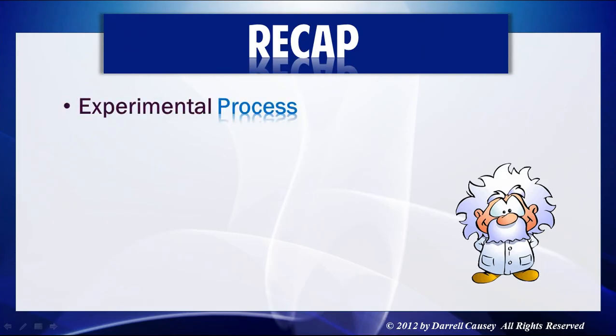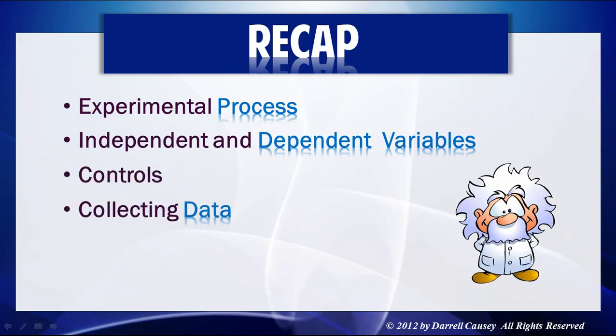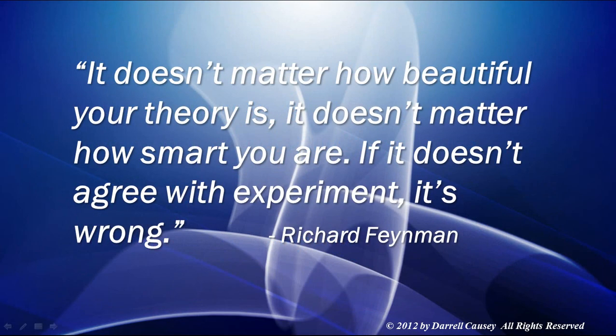Let's recap what we've talked about today: the experimental process, independent and dependent variables, controls, collecting data, and the different kinds of data — qualitative and quantitative. It doesn't matter how beautiful your theory is. It doesn't matter how smart you are. If it doesn't agree with experiment, it's wrong.